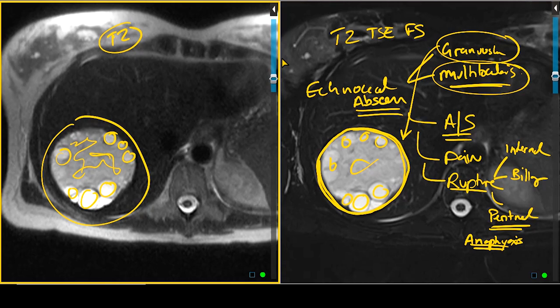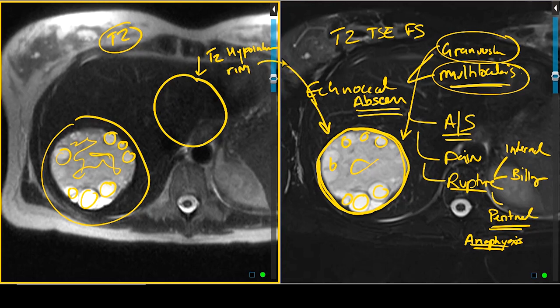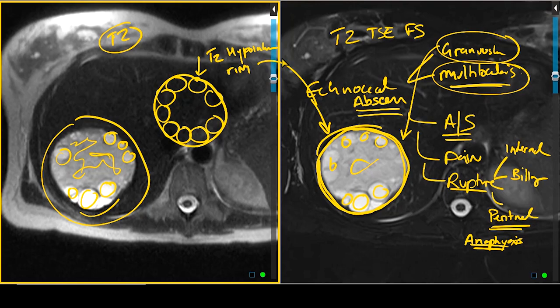The imaging appearance is quite characteristic. You will have a dominant cystic mass with a very discrete T2-hypointense rim, as can be seen on the fat-saturated image. At the periphery of this, you are going to see multiple daughter cysts. That is what we are seeing along the periphery of this mass, and this finding is characteristic of an echinococcal abscess.